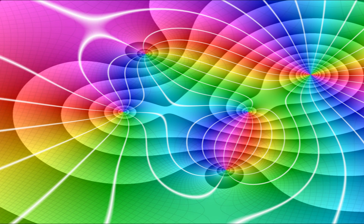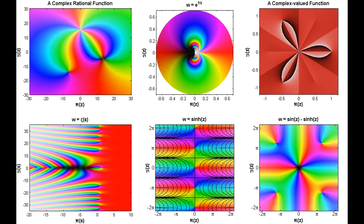Domain coloring is a method for representing complex functions like the Riemann zeta function. It can be used to show four dimensions, utilizing color and intensity of color to do so. The method uses colors for specific points — the origin is black, one is red, negative one is cyan, and infinity is white. The reason a four-dimensional representation is necessary is because complex functions are complex-valued functions of complex variables, making them two-dimensions by two-dimensions, or four-dimensional.